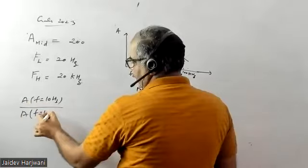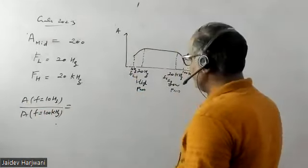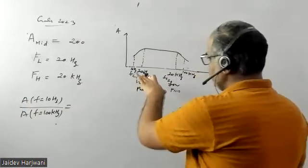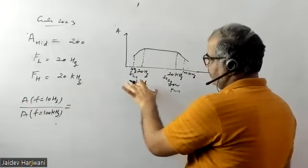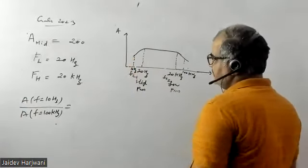As you can see, this is the cutoff frequency of high pass filter. So if you want to calculate the gain at frequency below 20 hertz, then the formula will be applied.